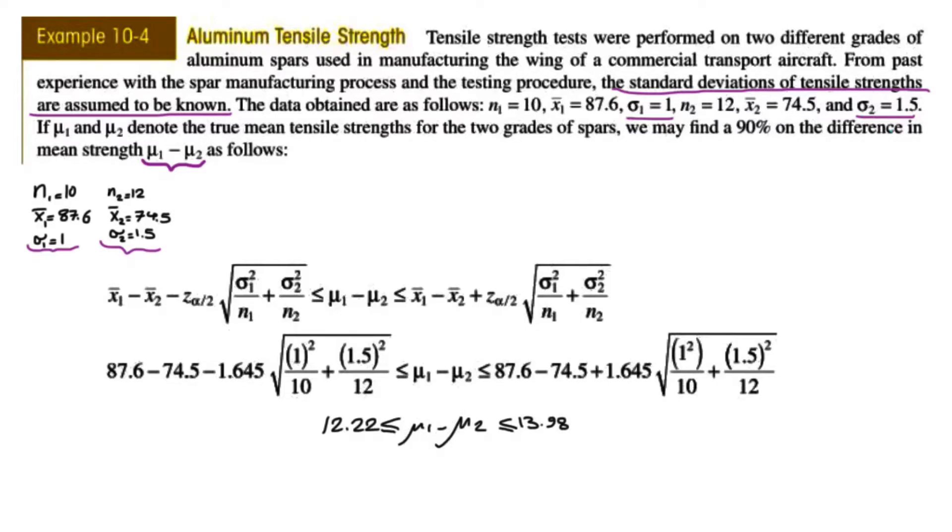That means, on average, the aluminum number 1 has 12 to 14 units of strength higher than the second one. So if you're in charge of manufacturing and you want to decide which one to choose, you would probably go with the aluminum type 1 that has the highest level of strength. If somebody asks with 90% level of confidence that μ1 is equal to μ2, the answer would be no, because the interval doesn't include zero.